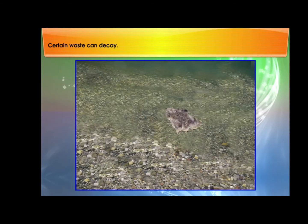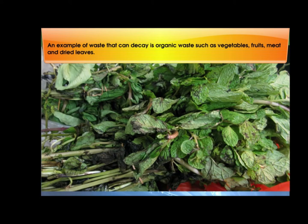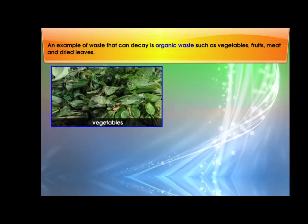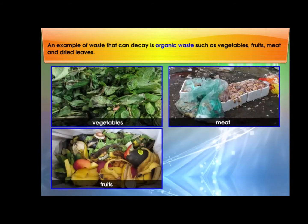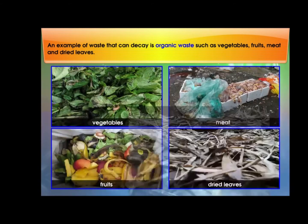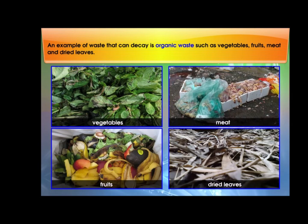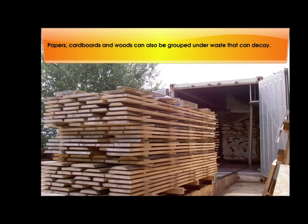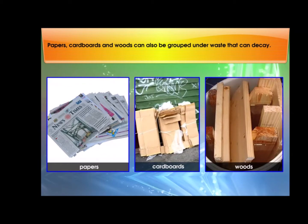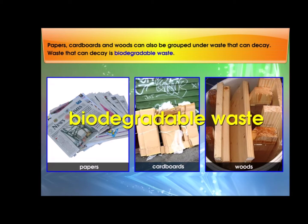Certain waste can decay. An example of waste that can decay is organic waste such as vegetables, fruits, meat, and dried leaves. Paper, cardboard, and wood can also be grouped under waste that can decay. Waste that can decay is biodegradable waste.